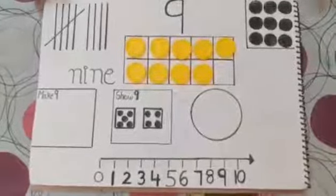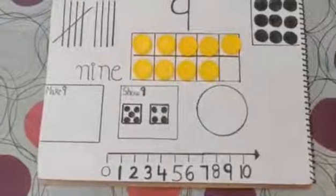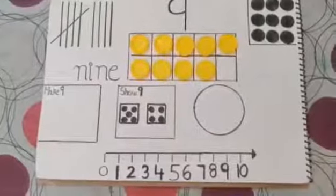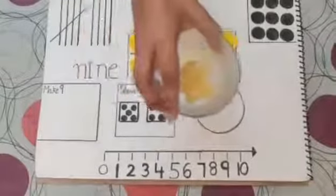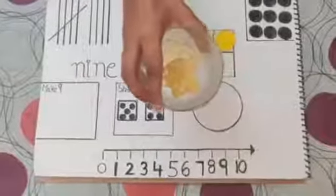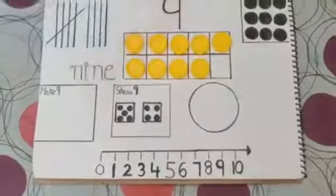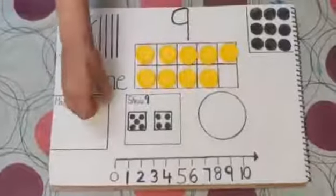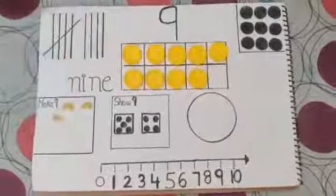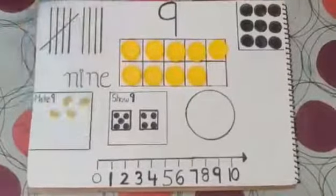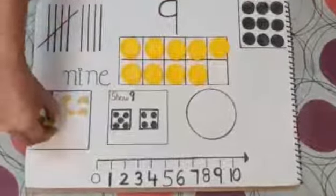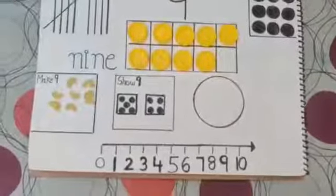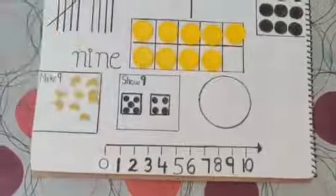Now, let's make a set of nine. Yes, now we will make a set of nine. So we will count nine pieces of macaroni and place it in the box. Let's do it together. One, two, three, four, five, six, seven, eight, and nine. Well done.